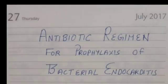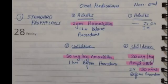Hello everyone. Today we will learn about the antibiotic regimen for the prophylaxis of bacterial endocarditis. First, we will study the standard oral prophylaxis in adults: we give two grams of amoxicillin one hour before the procedure.